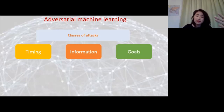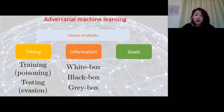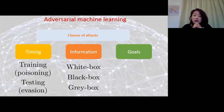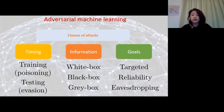For timing, it can either be during training time—also called a poisoning attack—or during testing time, often called an evasion attack. It also depends on the amount of information the adversary knows about the classifier: if it's completely black box, we know nothing; a white box means we know exactly what makes up the classifier; or it can be a grey box somewhere in between. There are three types of adversary goals: deliberately inducing a specific type of misclassification (targeted attack), reducing the reliability of the algorithm, or simply extracting information about the classifier—more like an eavesdropping type of attack.